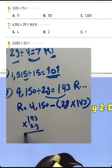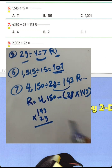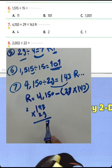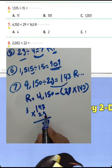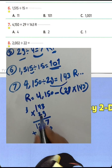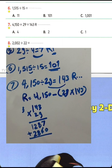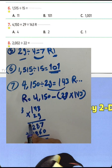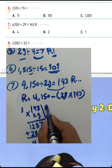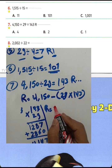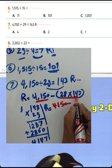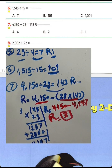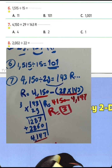We calculate 143 times 29: 3 times 9 equals 27, write 7 carry 2; 4 times 9 equals 36 plus 2 equals 38, write 8 carry 3; 1 times 9 equals 9 plus 3 equals 12. Then the tens row: 2 times 3 equals 6, 2 times 4 equals 8, 2 times 1 equals 2. Adding: 7, 14 carry 1, 11 carry 1, giving 4147. So 4150 minus 4147 equals remainder 3.